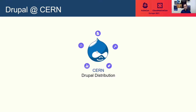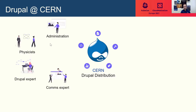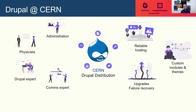Drupal at CERN is actually a rather complicated ecosystem. We provide, on top of core Drupal, a set of curated modules accessible to everyone. But the user base is very wide-ranging — there are physicists whose responsibilities also include site building, administrative personnel, and communications experts. Actually a very small minority of site administrators are web developers, people with site building experience or Drupal experts. All of these people need the same easy experience of very reliable hosting where they don't have to take many responsibilities for security incidents, upgrades, or recovering from common failures.